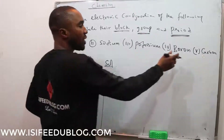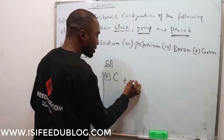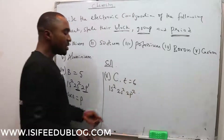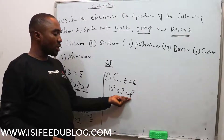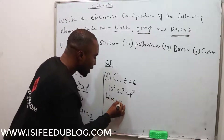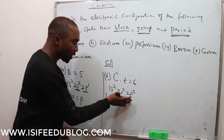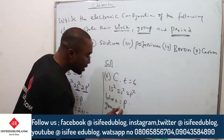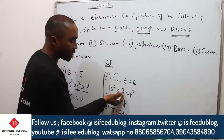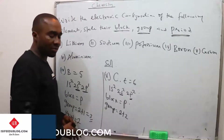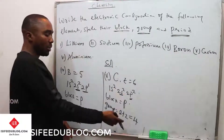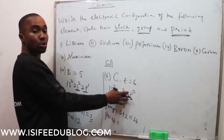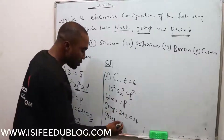Number 5: carbon. The atomic number of carbon is 6. The electronic configuration is 1s² 2s² 2p². Carbon belongs to P-block because the configuration ended with P. For the group, add the electrons in the last S and last P: 2 plus 2 equals 4. So carbon belongs to Group 4. The period is the number at the back of the last P orbital, which is 2, so the period is 2.